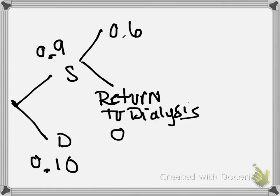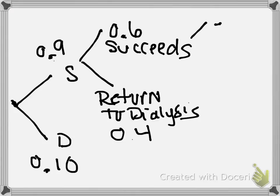So that's 0.4. The 60% is the one that the transplant succeeds. Of those where the transplant succeeds, 70% of them survive five years.